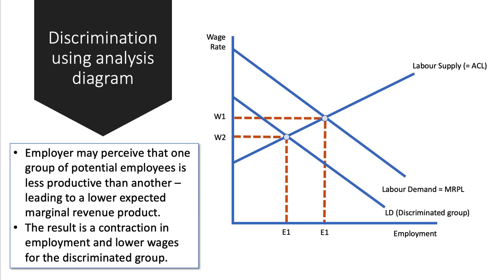In terms of analysis of discrimination, the crucial thing is to be able to use an analysis diagram for A-level. What tends to happen, if you think about a group that is discriminated against, is that the employer may perceive that one group of potential workers is less productive, less valuable than another. That feeds into a lower expected marginal revenue product, shown in the fact that the labour demand curve for the discriminated group is lower and to the left than the marginal revenue product normally. The result is that the wage paid will be less and fewer people are employed, so the discriminated group will have fewer job opportunities and may have to take lower pay.